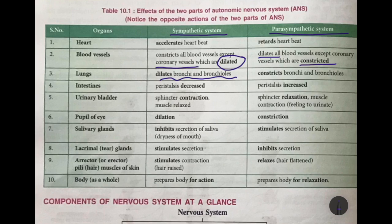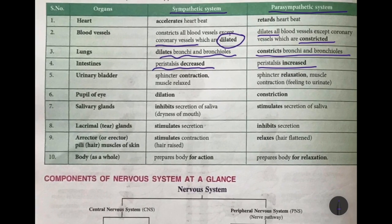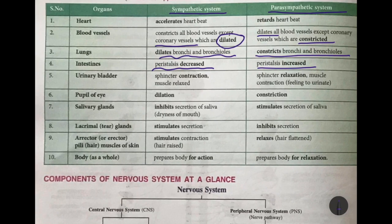The sympathetic system dilates the bronchi and bronchioles in the lungs so that more air and oxygen reaches them, while the parasympathetic brings it back to normal by constricting them. In the intestine, sympathetic decreases peristalsis so food passes more slowly, while parasympathetic increases peristalsis back to normal. For the urinary bladder, the sympathetic contracts the sphincter muscles so you do not feel like urinating, while the parasympathetic relaxes them so you feel the urge to urinate.